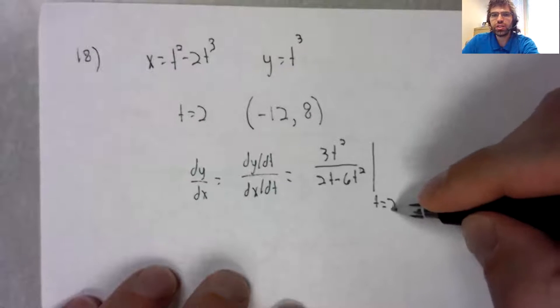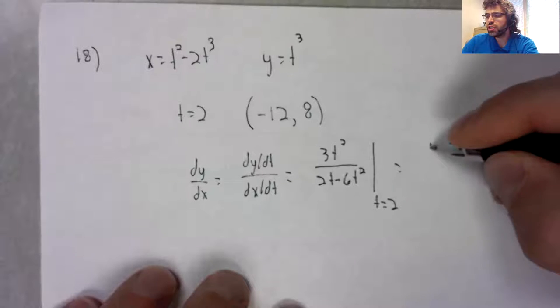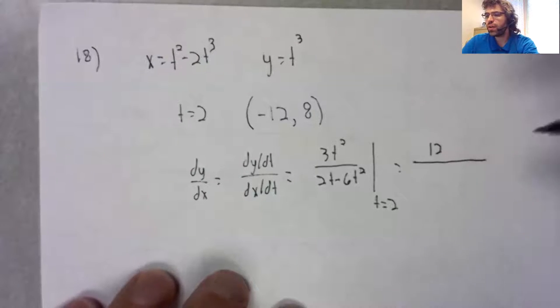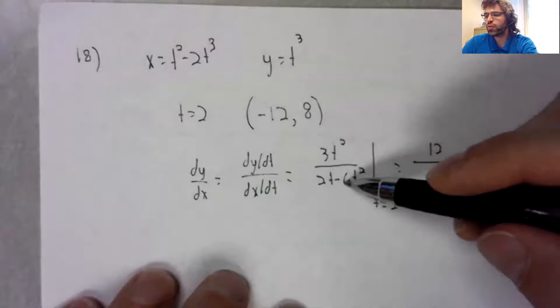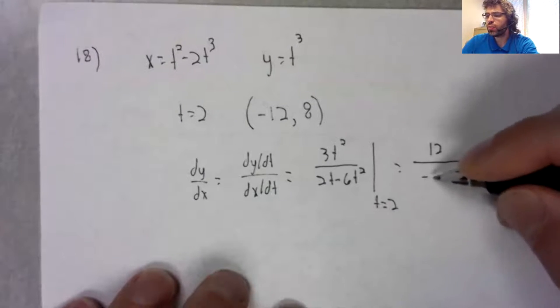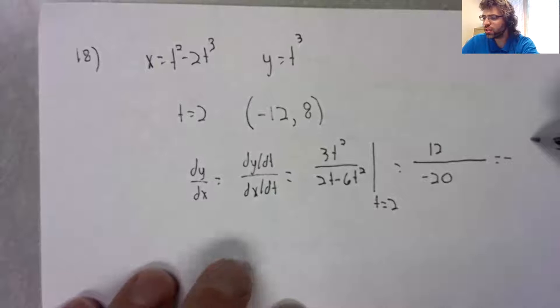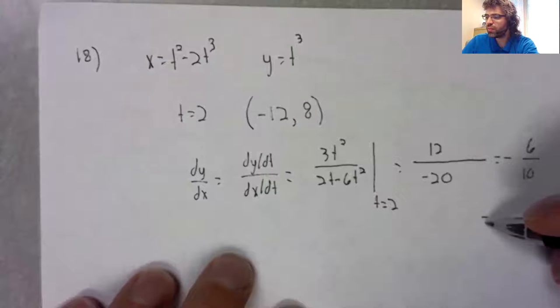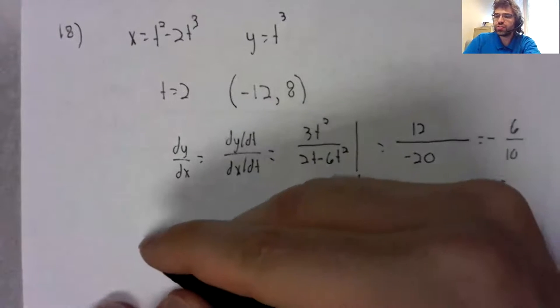And we're plugging in t equals two. Four times three is 12, let's see, four, 24, four minus 24. I'm obviously doing this quickly in my head, so you can tell me if I'm making any obvious errors, but I get a slope of negative three fifths.